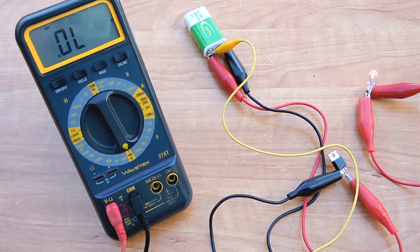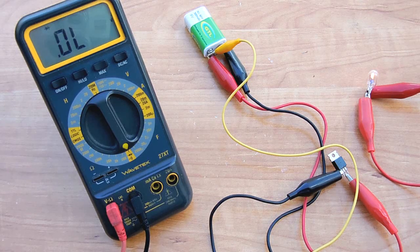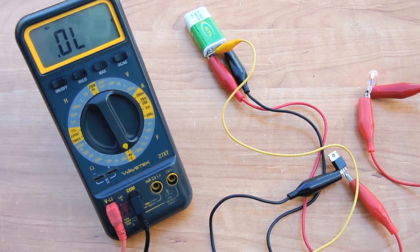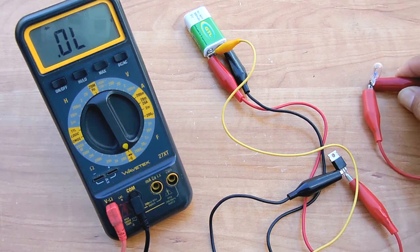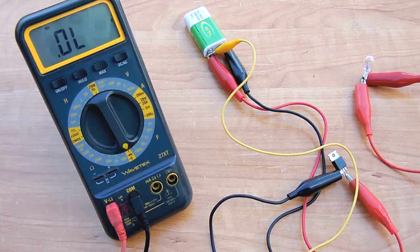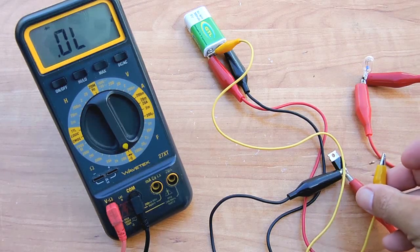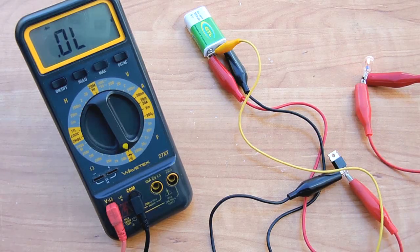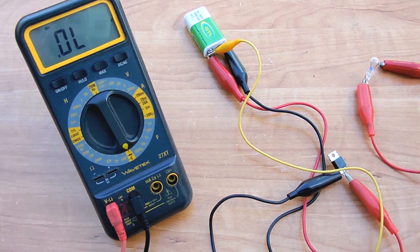Now the good thing about silicon controlled rectifiers is that once the gate is triggered, the SCR will remain latched. It will not turn off unless you disconnect the load first and then reconnect it. Once it's reconnected it's reset. You could then touch the gate again to turn it back on. That's how these work.